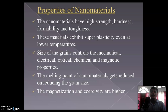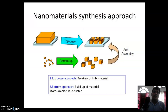The melting point of nanomaterials gets reduced on reducing the grain size — as the size of the nanomaterials is smaller, their melting point is very low. Finally, the magnetization and corrosivity of nanomaterials are higher as the size is smaller — that's why their corrosivity is higher.